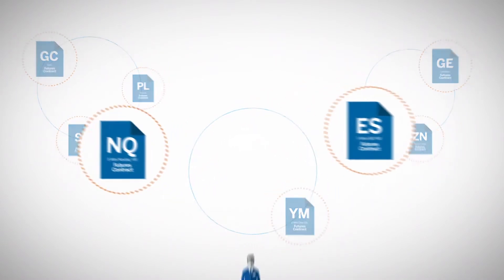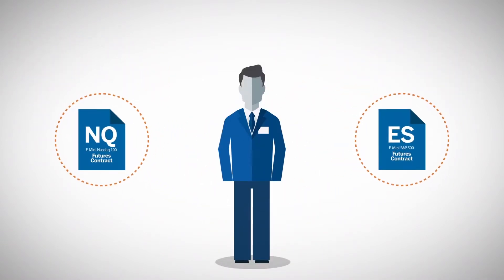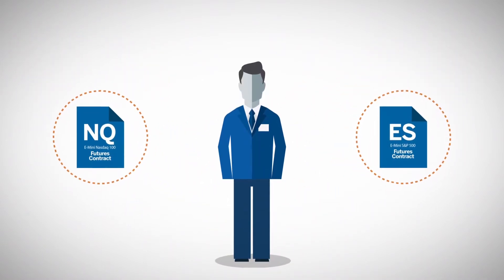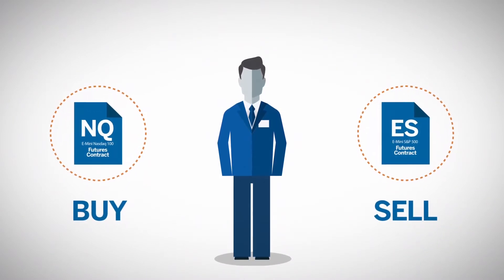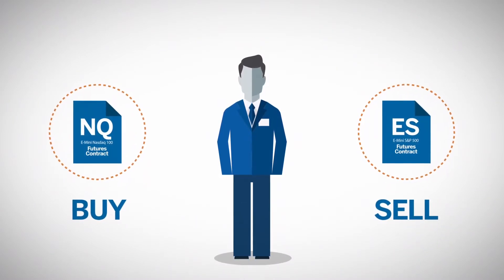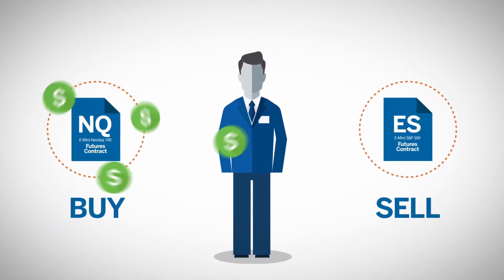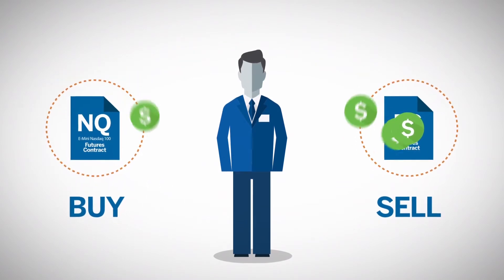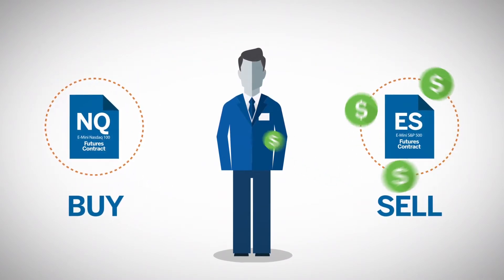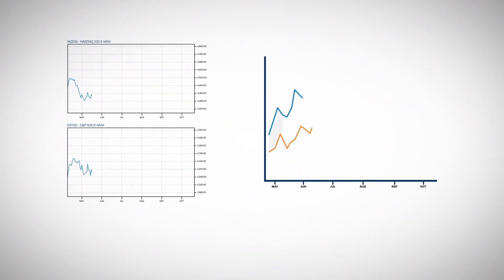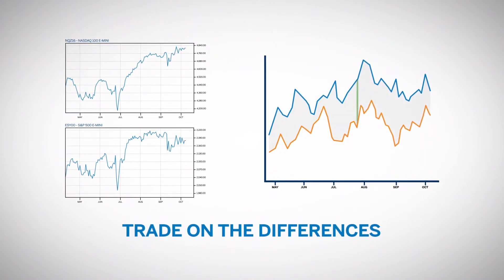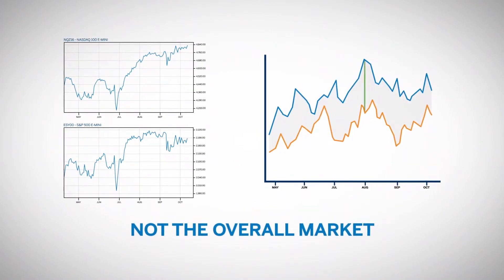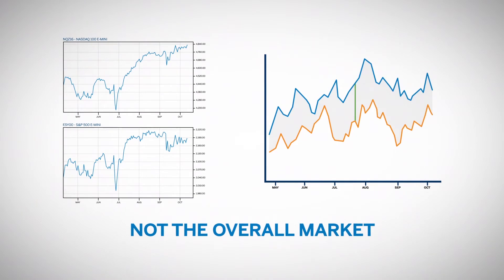For example, you could take a spread position between two different stock indexes by buying one and selling another. If you're bullish on the technology sector versus the broad market, you could buy the Nasdaq futures and sell the e-mini S&P. The point of entering into an intermarket spread is to trade on the differences between the two respective contracts rather than the direction of the overall market.